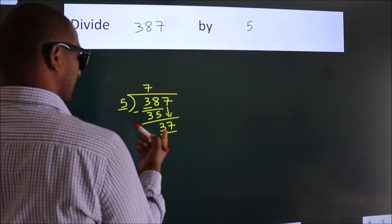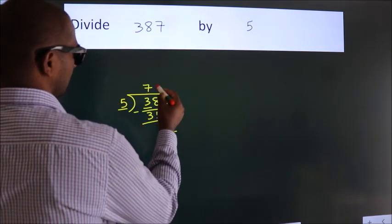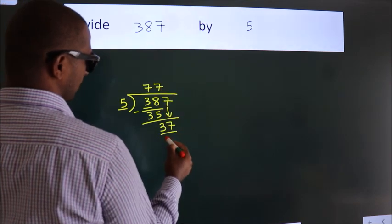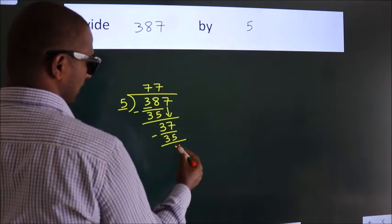So 37. A number close to 37 in the 5 table is 5 times 7, which is 35. Now we subtract. We get 2.